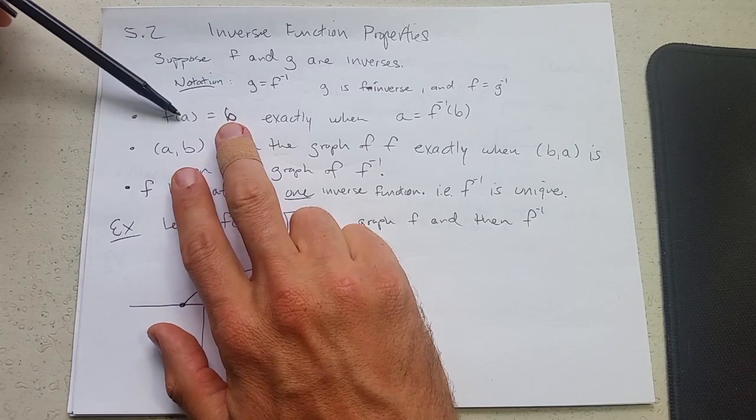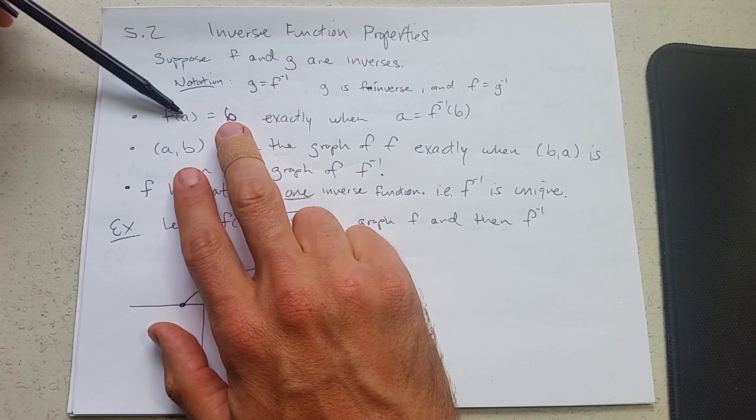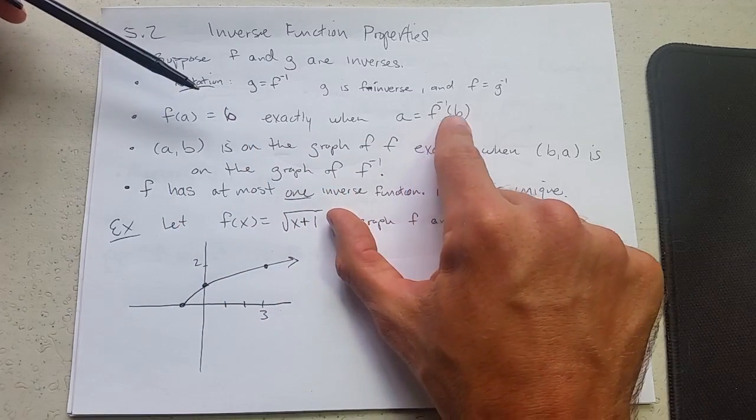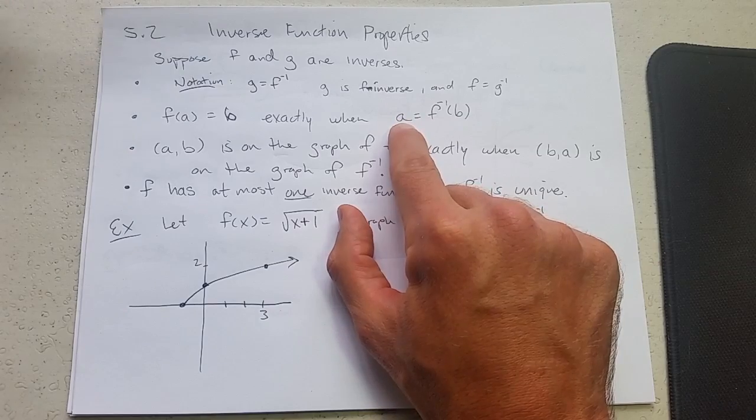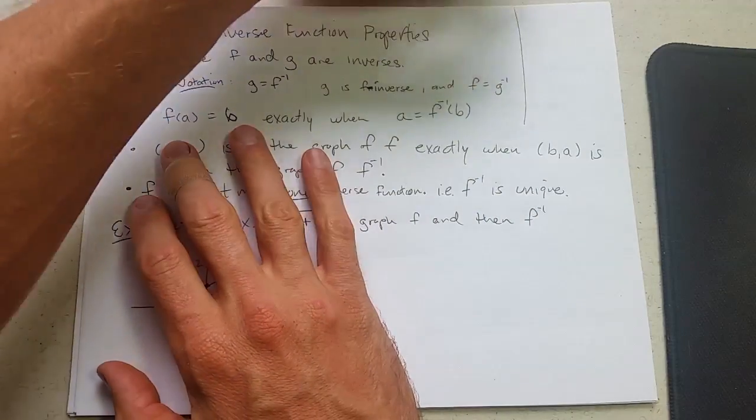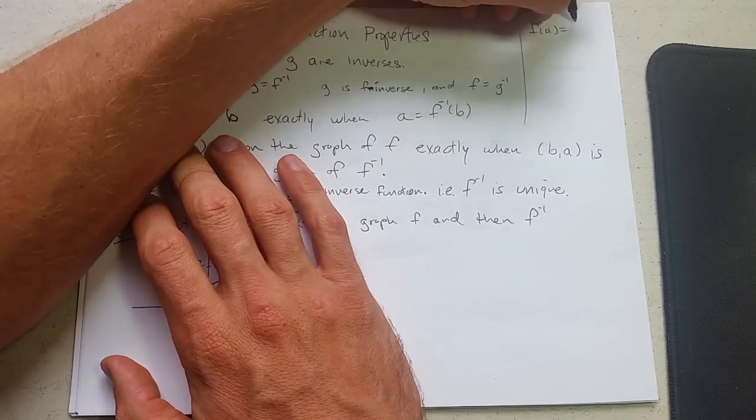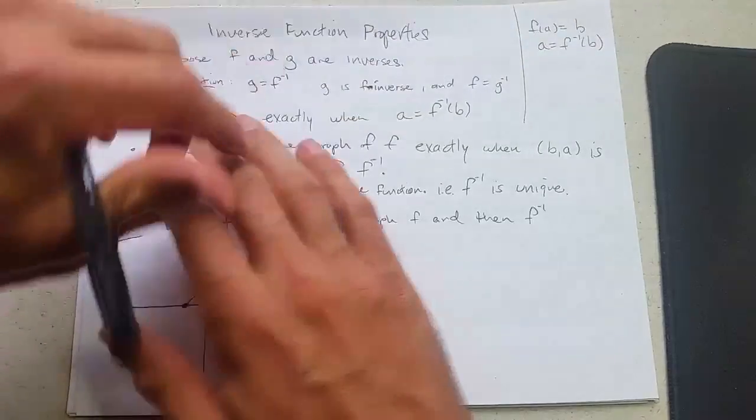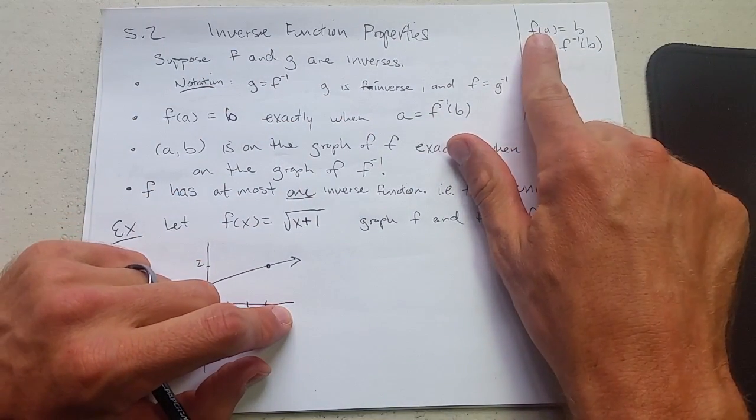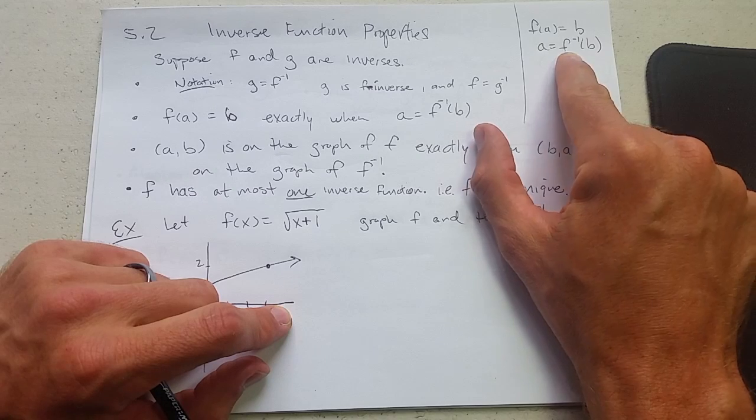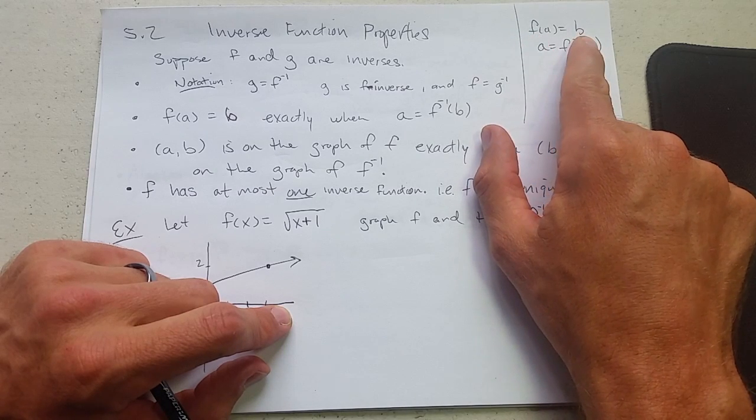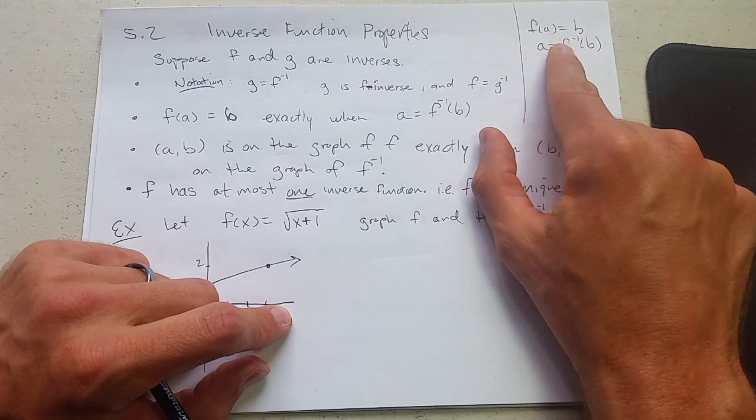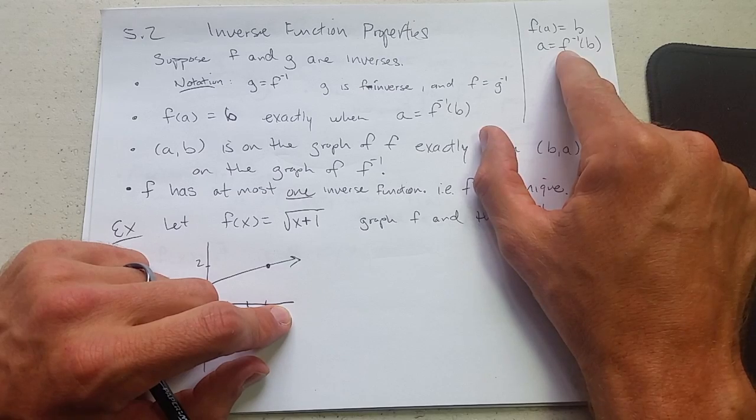If you have f of a equals b, you can change this around and write, so if f takes a to b, then f inverse takes b to a. And if you write this out one above the other, I call this moving the function to the other side by using the inverse. So you can take f equals b, if you know the inverse function, you can apply the inverse function and you're basically moving the function to the other side but you're writing it as the inverse function.